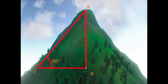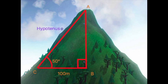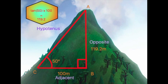In this particular equation, we are using an angle and the adjacent side to discover the length of the opposite side. We therefore have the equation tan 50 equals O divided by 100. This can be rearranged to tan 50 times 100 equals O, meaning side O must be 119.2 meters in height.